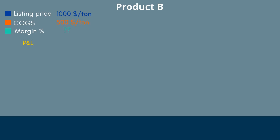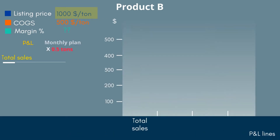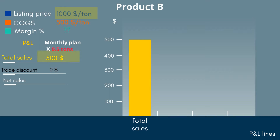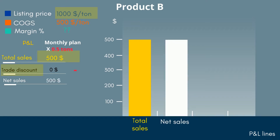The first line in the P&L is the total sales, which is equal to the listing price of $1,000 US dollar per ton multiplied by 0.5 tons. For simplicity, we will assume there is no trade discount. The third line is the net sales — total sales minus trade discounts — which equals $500 US dollars.